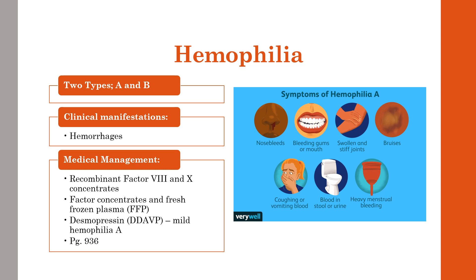Superficial hematomas can cause nerve compression and impaired sensation, and over time can lead to weakness and atrophy. Bleeding is not confined to joints — it can occur with dental extractions, spontaneous hematuria, GI bleeding, nosebleeds, and falls leading to head injury and potentially a terrifying intracranial bleed, so safety is a major concern.